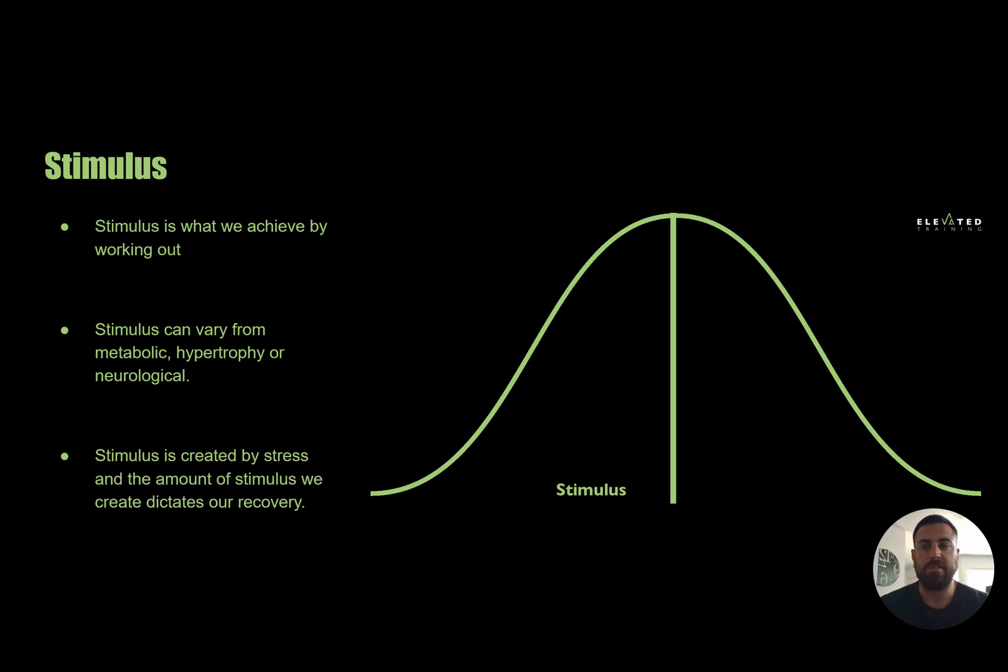The first section is the stimulus that we are achieving by working out. So we go in, we do some heavy sets, we're achieving a very heavy neurological stimulus. Say we hit it right on the nose and we've optimized everything we can and got as much stimulus as possible out of that workout. That takes us to the very top of the bell curve - that peak is optimal stimulus for our workout. Now once again, it could be any type of stimulus we're looking for, whether it's metabolic, hypertrophy, or neurological. The top of the bell curve represents us hitting optimal amount of stimulus to achieve adaptation.